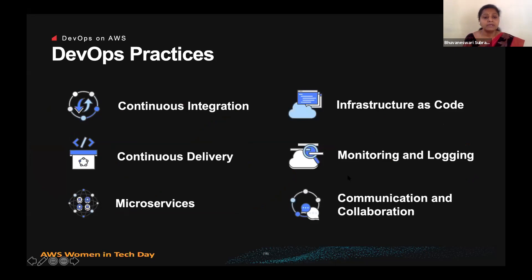So what are the DevOps practices — some jargons — let's demystify them. First: continuous integration, continuous delivery, microservices, infrastructure as code, monitoring and logging, and most importantly, communication and collaboration.